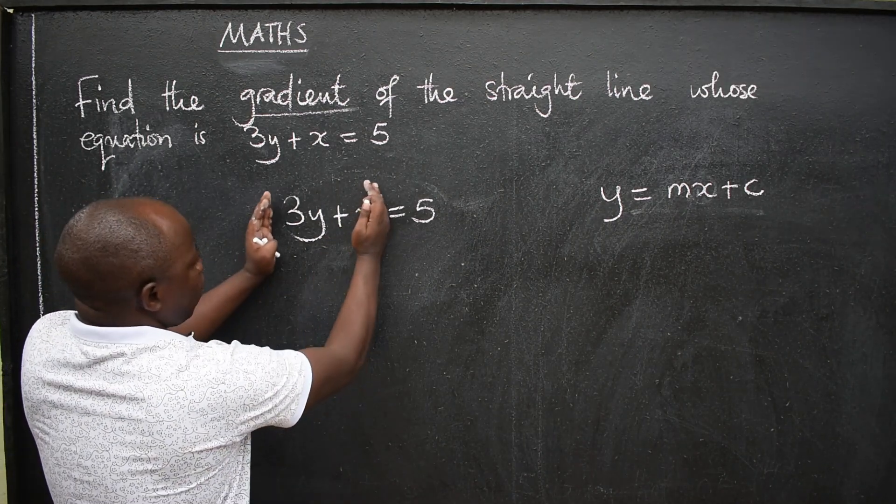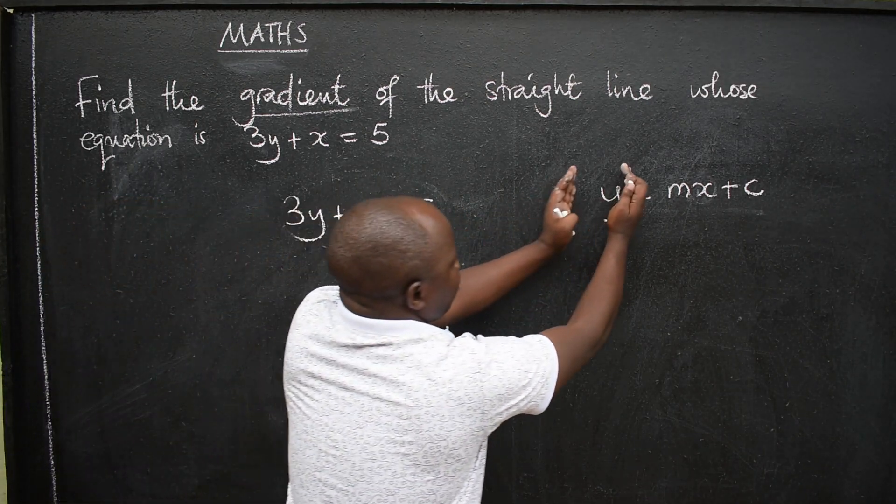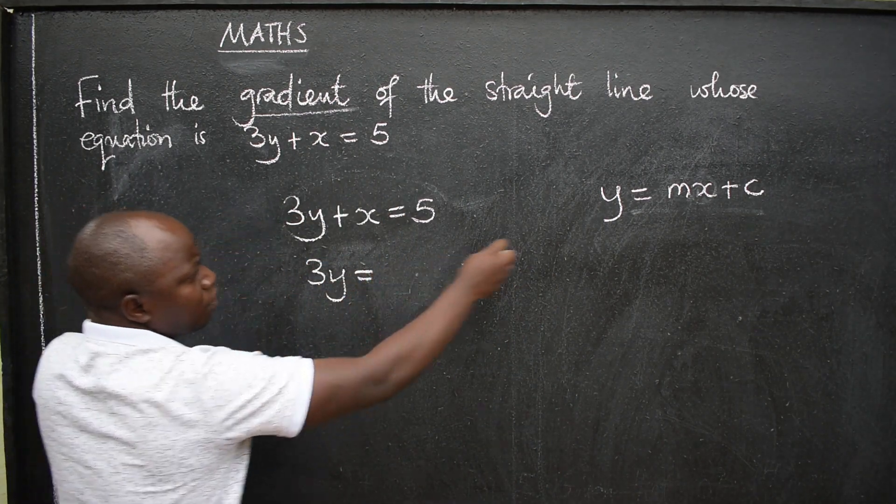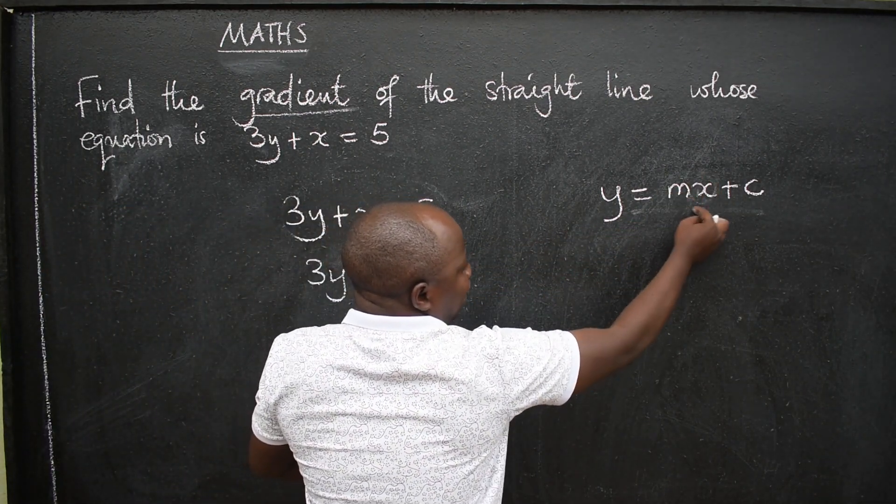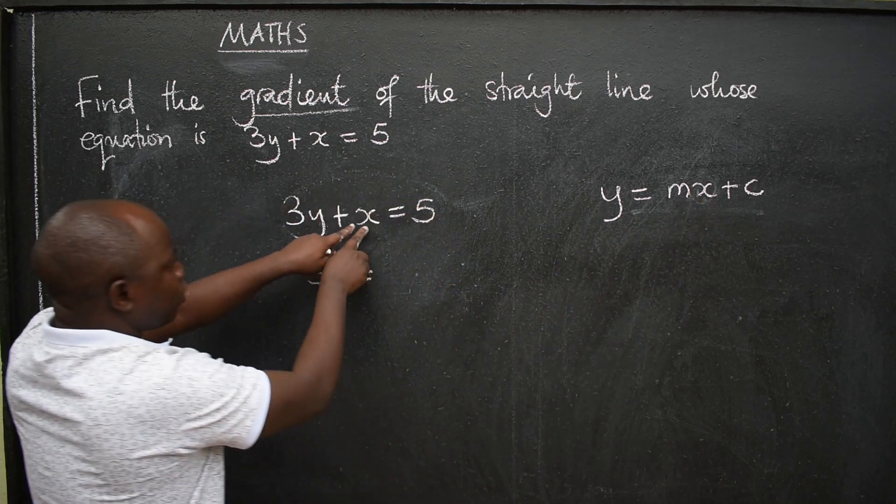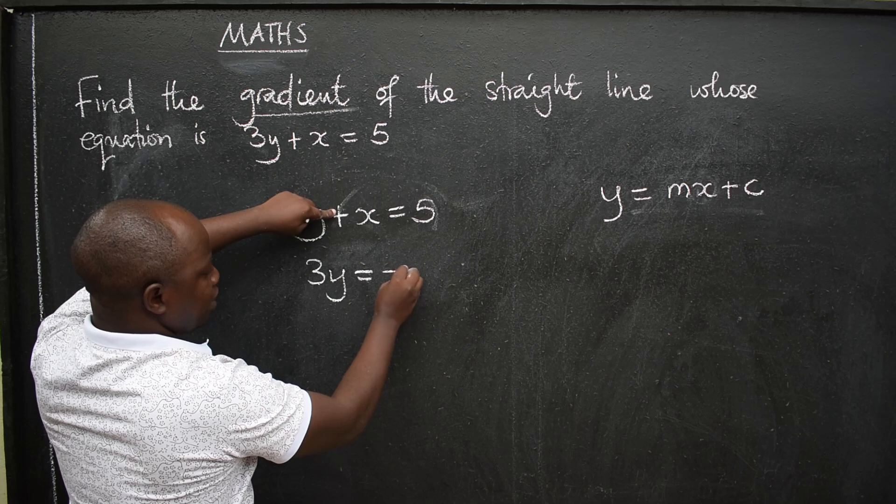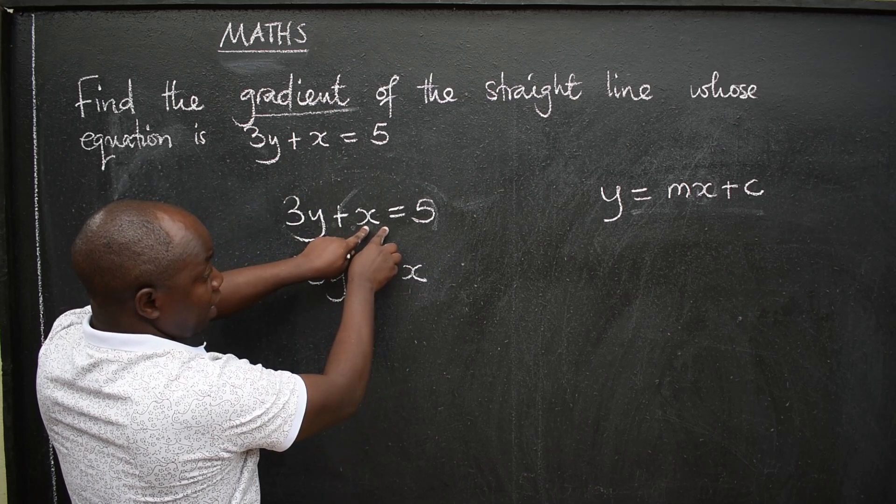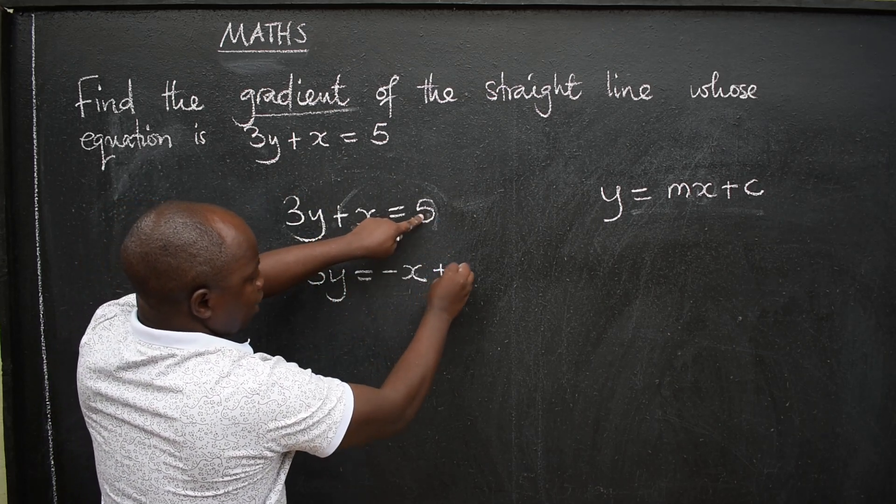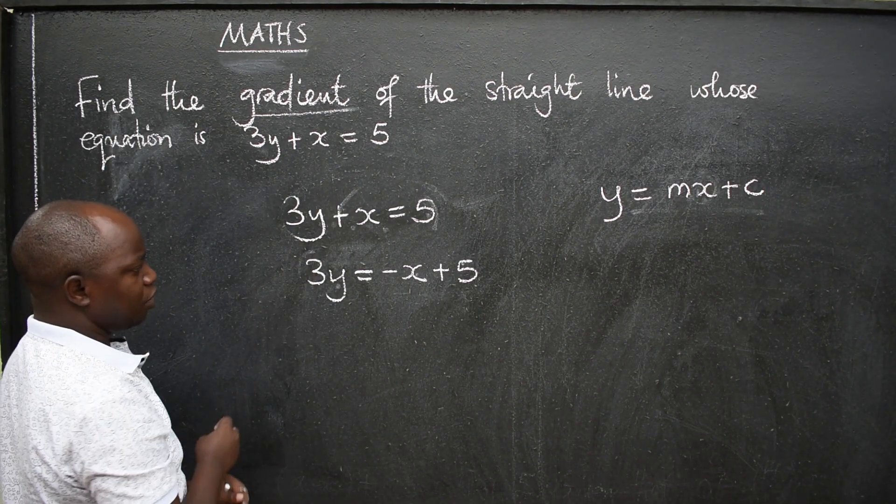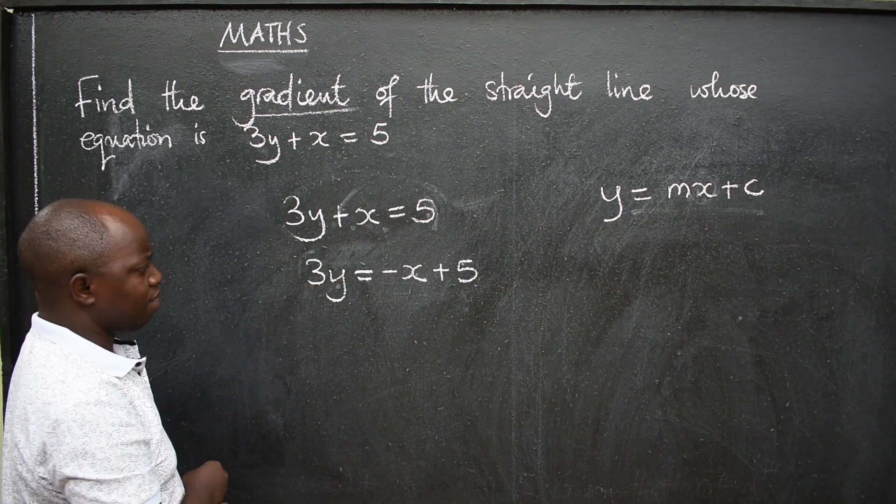Well, on the left hand side I have to remain with y. So I'll be able to say 3y = what? Next should be a term containing x. So here is x. This is positive. It crosses the equal sign, becomes negative x. So it will be -x. We have +5.